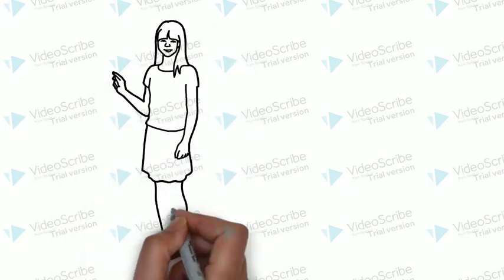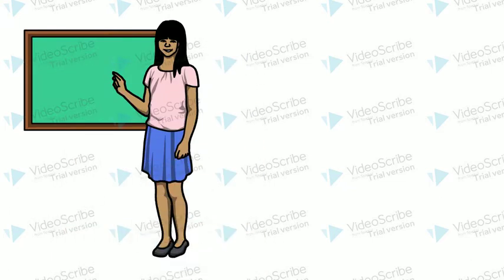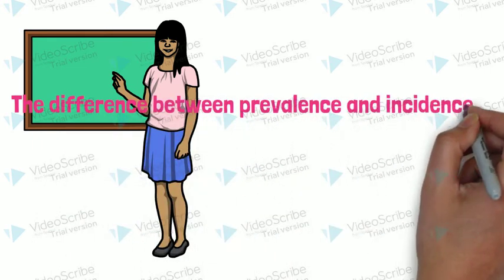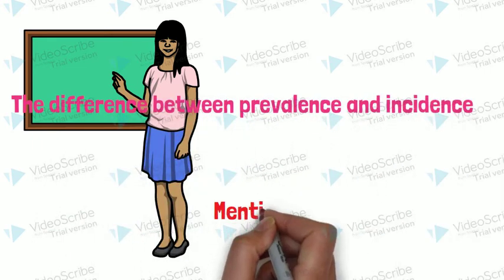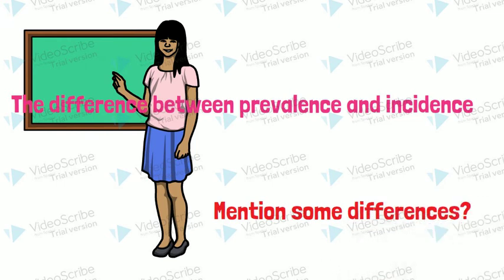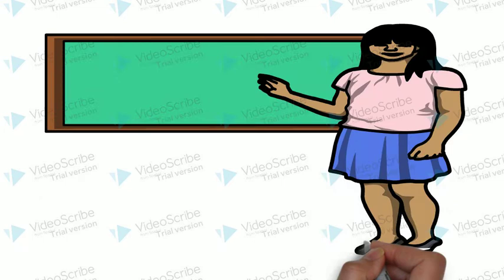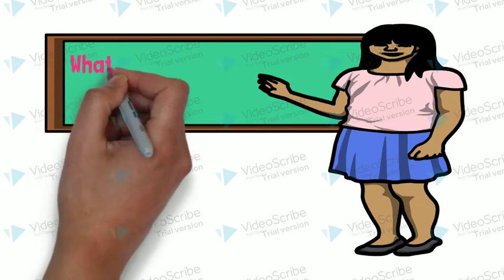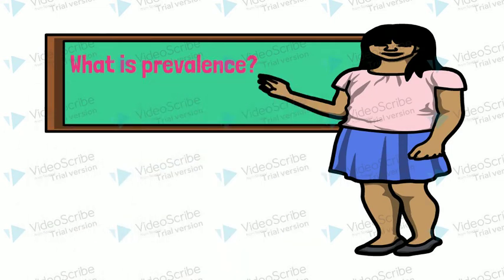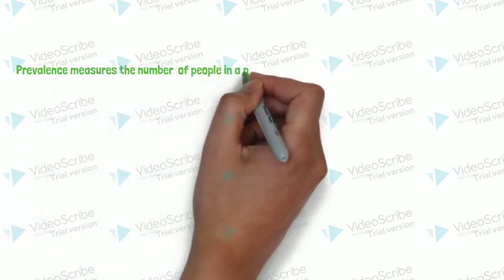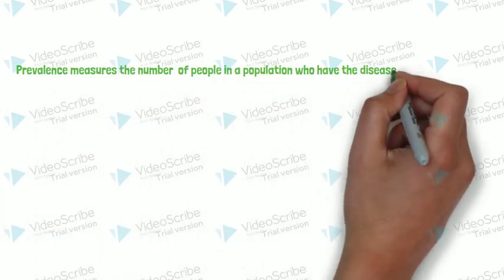Between prevalence and incidence, let's mention some differences between them. What is prevalence? Prevalence measures the number of people in the population who have the disease at a given point or period in time. Prevalence measures disease status or disease burden.